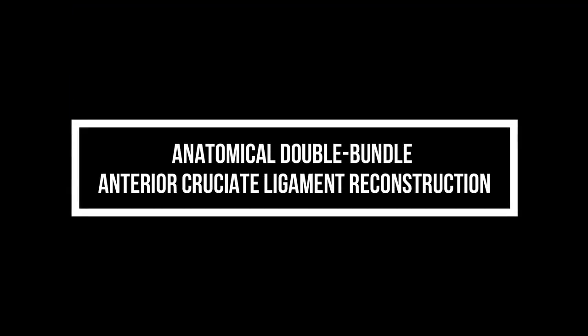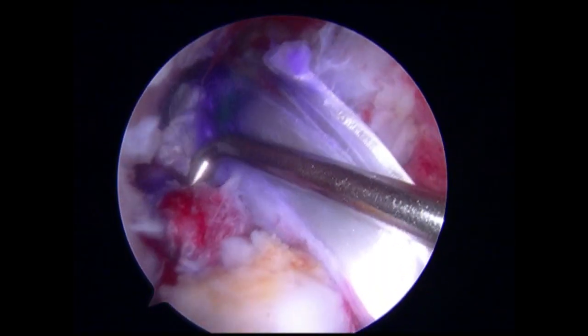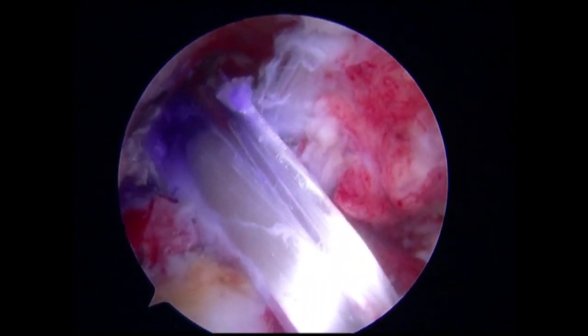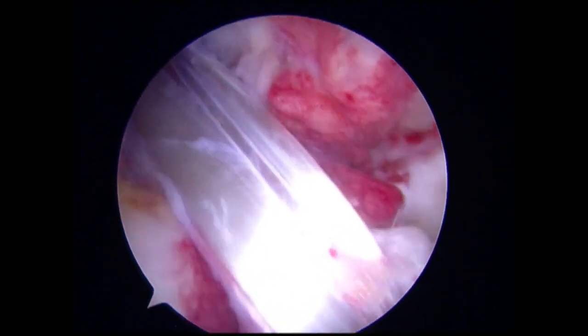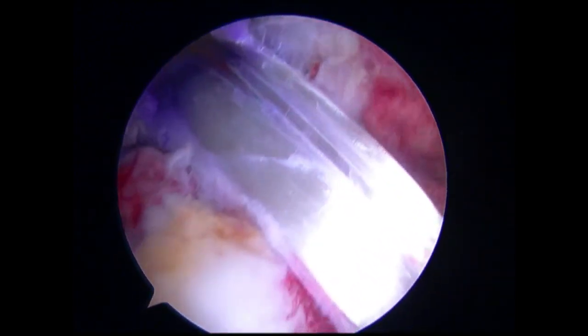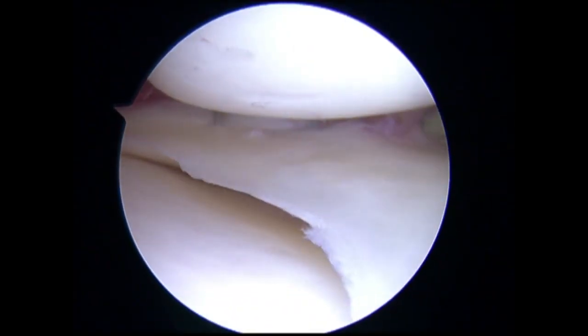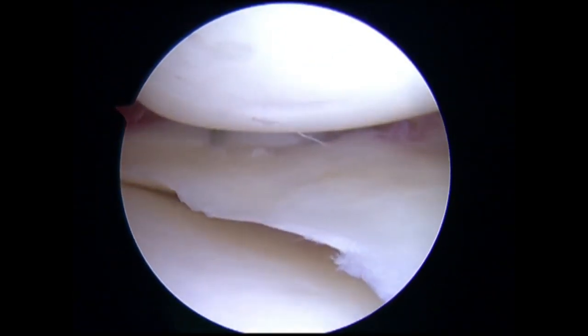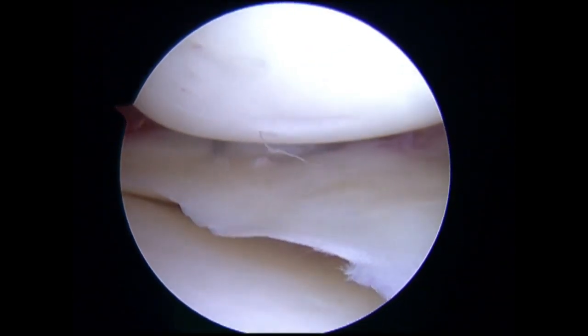Anatomical double-bundle ACL reconstruction is performed using standard procedures. Final check of the medial meniscus confirms the repaired medial meniscus is stable.